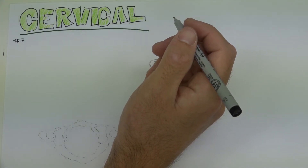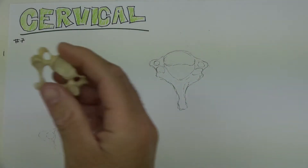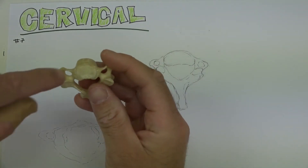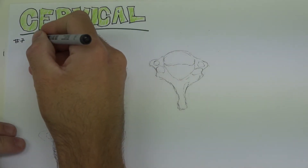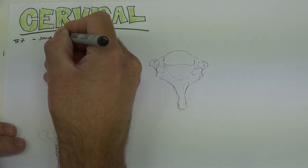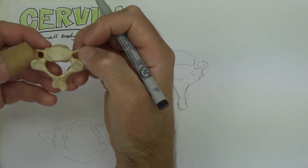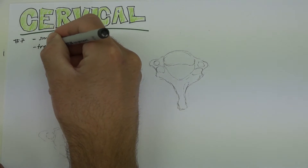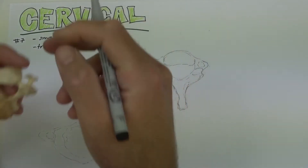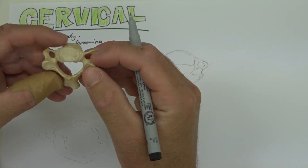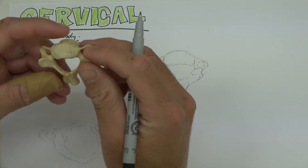The cervical vertebrae in general are quite small. You can see that the body is very small. Some special features to note: it has a small body, and it has transverse foramina on either side. These are special in that they only exist in the cervical vertebrae, and what goes through them is the vertebral artery, which we'll talk about a little bit later.